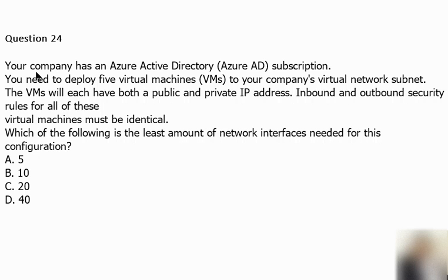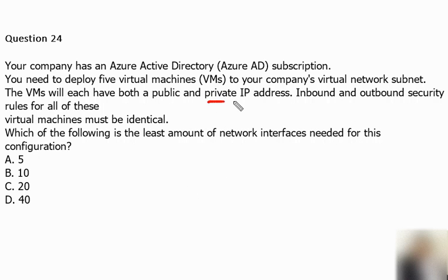Question 24: Your company has an Azure Active Directory subscription. You need to deploy 5 virtual machines to your company's virtual network subnet. The virtual machines will each have both public and private IP addresses. Inbound and outbound security rules for all of these virtual machines must be identical. Which of the following is the least amount of network interfaces needed for this configuration?